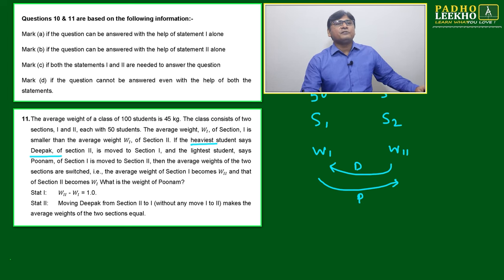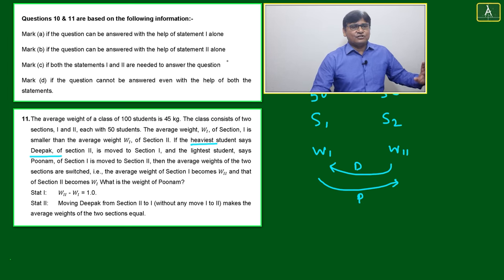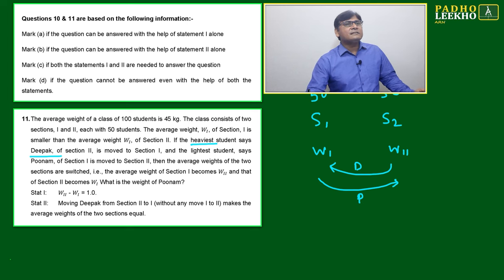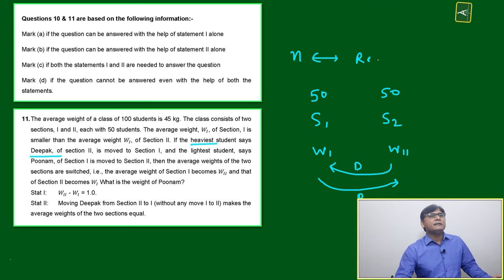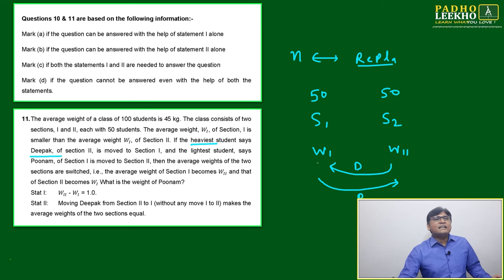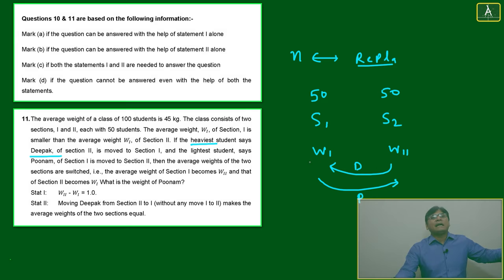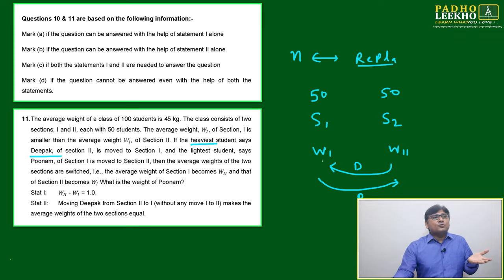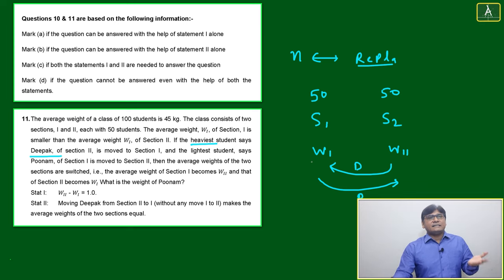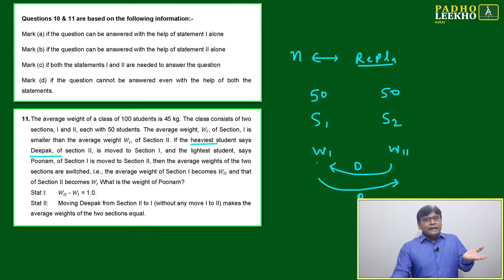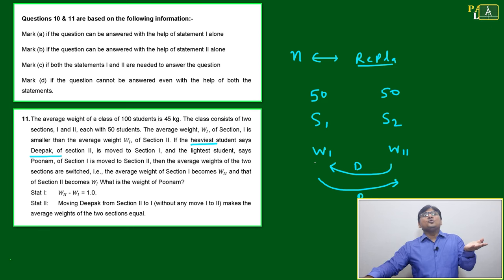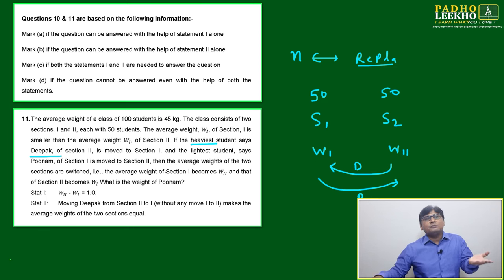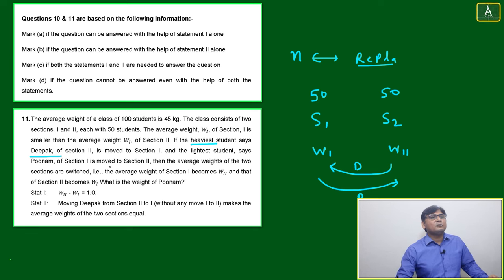n is constant, so this is a case of replacement. The heavier student, Deepak, is coming into Section 1, so Section 1's average will go up. Poonam is going to Section 2, so Section 2's average will go down. That's the common sense observation here.